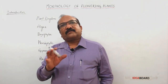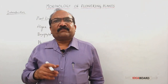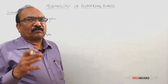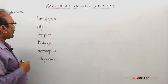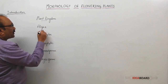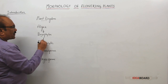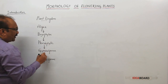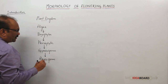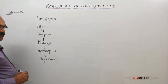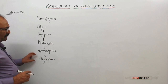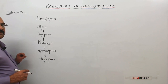Bryophytes are the first land plants without vascular tissues. Pteridophytes are the first land plants with vascular tissues. During the course of evolution, algae were the first formed, then bryophytes came, then pteridophytes, then gymnosperms, and then angiosperms. So the most primitive plants are algae, and the highly advanced plants are angiosperms.